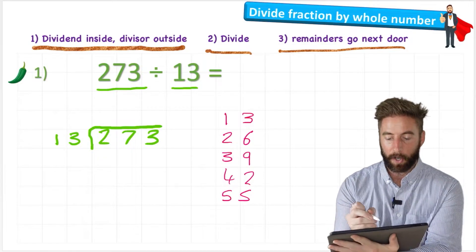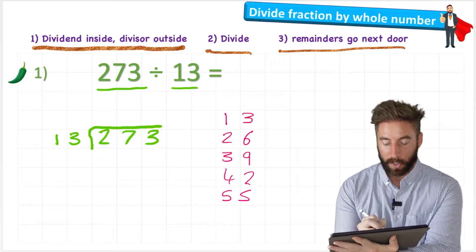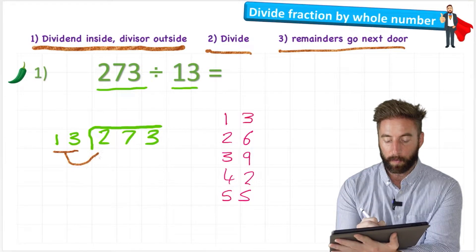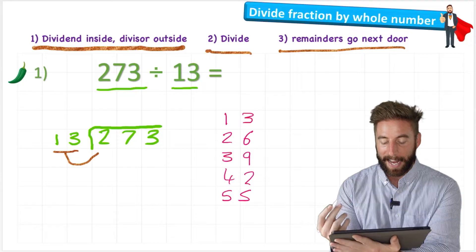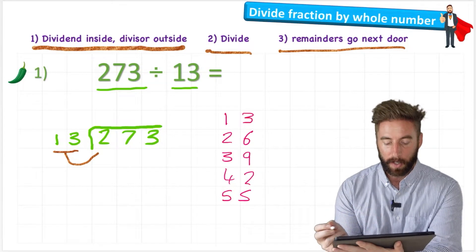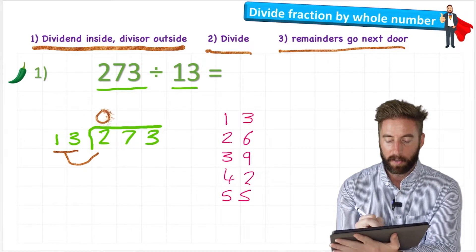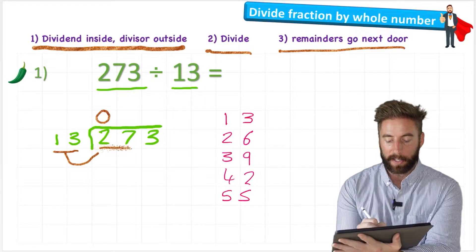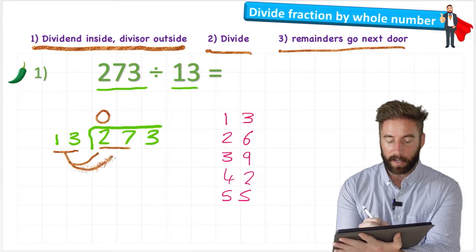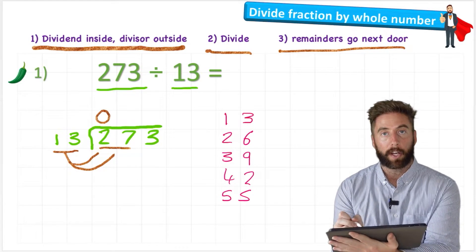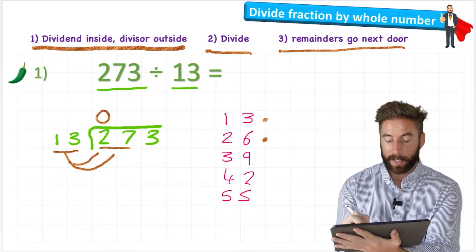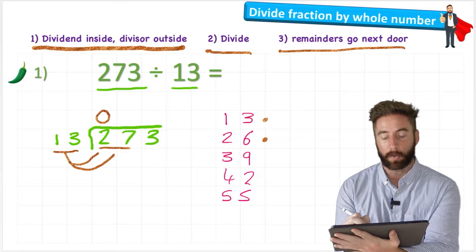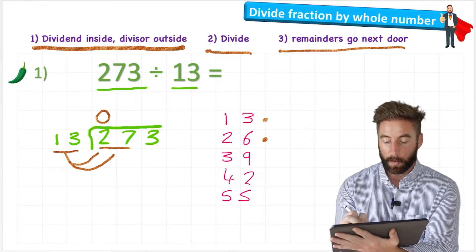Okay, and we're going to use short method. So my first question says how many 13s are in 2? Well, as I can see quite clearly by my multiplication chart, we can't get any 13s out of 2. So I would put a 0 and now I'm going to look at 27. How many 13s are there in 27? So I can look down my multiplication chart and I can see we have a 13, we have another 13 that gets to 26, but obviously I can't go any higher than 26 because our number is 27. So I have 2.